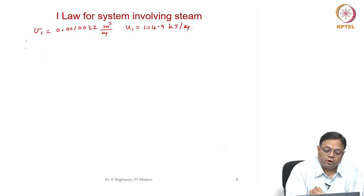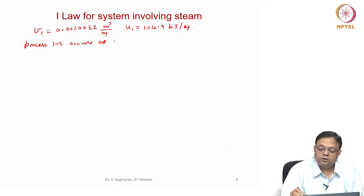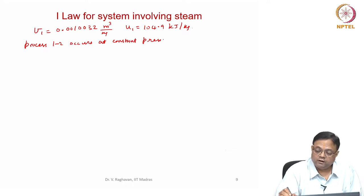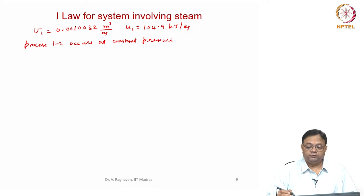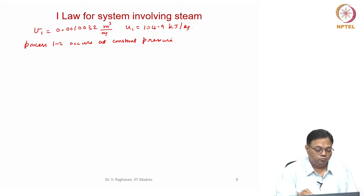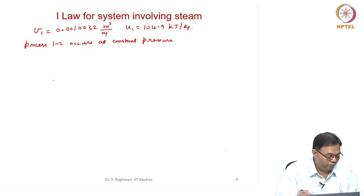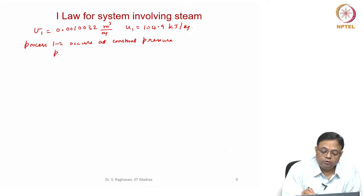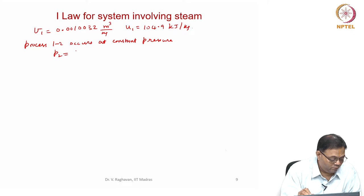From the saturation temperature tables, V1 = 0.0010032 m³/kg — a very small volume. Similarly, U1 = 104.9 kJ/kg. These are the initial state properties. Process 1 to 2 occurs at constant pressure because the piston is free to move, so P2 = P1 = 200 kilopascals.